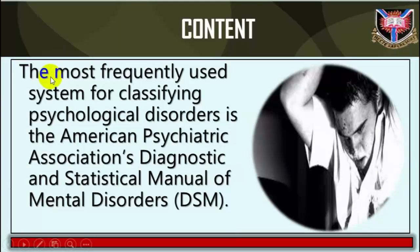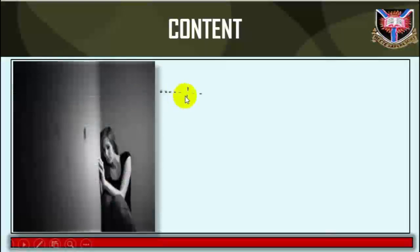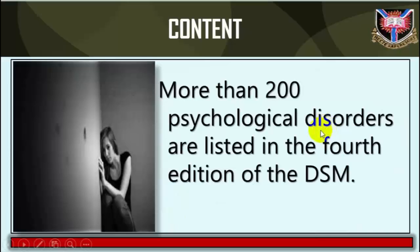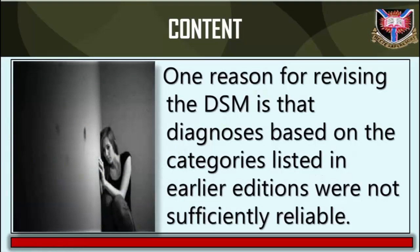The most frequently used system for classifying psychological disorders is the American Psychiatric Association's Diagnostic and Statistical Manual of Mental Disorders, DSM. More than 200 psychological disorders are listed in the fourth edition of the DSM. One reason for revising the DSM is that diagnoses based on the categories listed in the earlier editions were not sufficiently reliable.